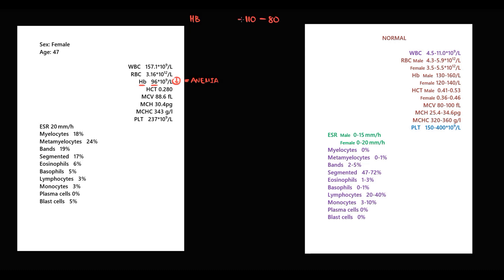Normal hemoglobin level for males is 130–160 and for females 120–140. From 110 down to the lower limit of normal is mild anemia; from 80 to 110 is moderate anemia; and lower than 80 is severe anemia. In this case, hemoglobin is 96, so it is moderate anemia.